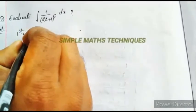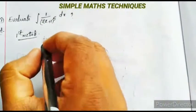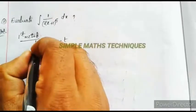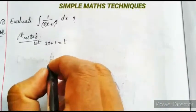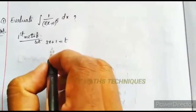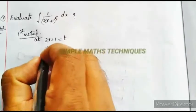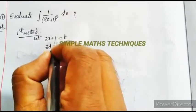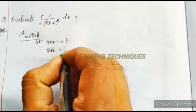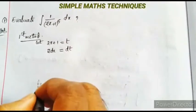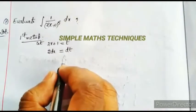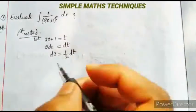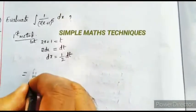Here, the first method is the substitution method. We assume that 2x+1 equals t. Differentiating both sides: differentiating 2x gives 2 dx, and differentiating 1 gives 0, equals dt. So 2 dx equals dt.